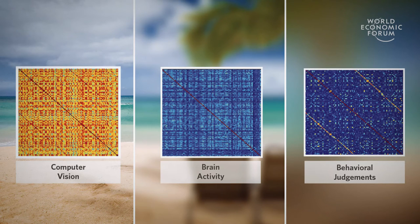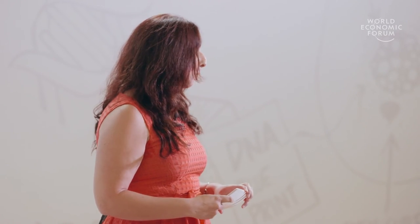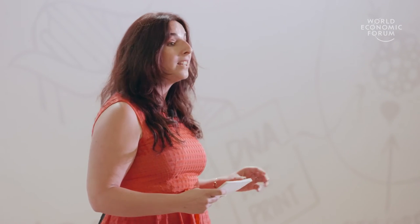Therefore, we asked whether computers could help us understand brain function better than we could understand it with our own self-awareness. So we compared the computer's analysis of scenes to the brain's analysis of scenes, and to our own self-reflective analysis of scenes. It turned out that computers did really well in explaining our brain's analysis of scenes, whereas self-reflection did not.